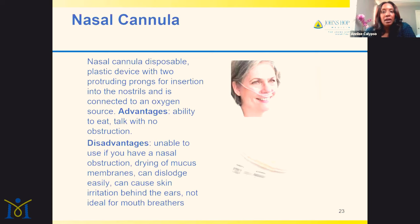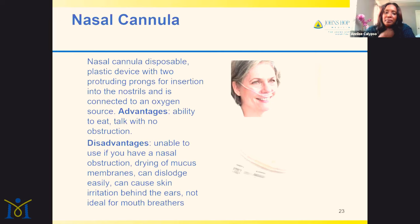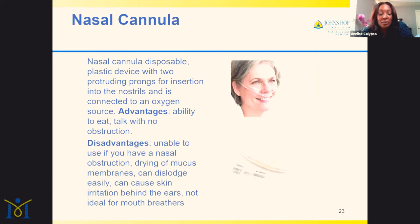Oxygen can be delivered via nasal cannula — a disposable plastic device with two prongs that go into your nostrils, connected to an oxygen source. The advantages are that you're able to eat and talk with no obstruction. The disadvantages include nasal obstruction issues, deviated septum, chronic drying mucus, and it can be painful or uncomfortable in those cases. They can be dislodged easily and can cause irritation behind the ears. And if you're a mouth breather, a nasal cannula isn't ideal — you can't convince someone to breathe through their nose if they're a mouth breather.